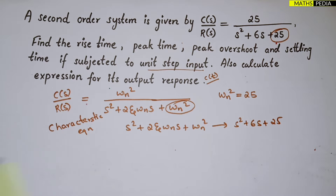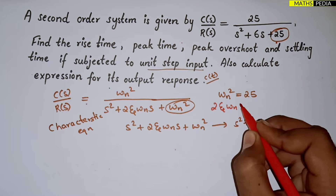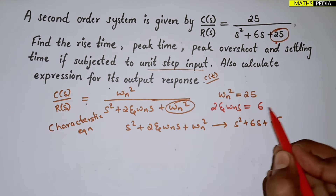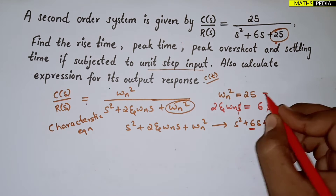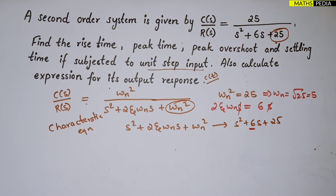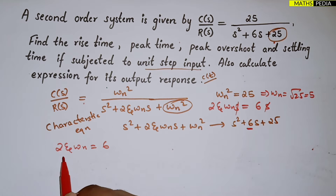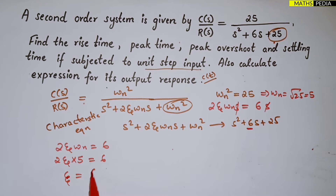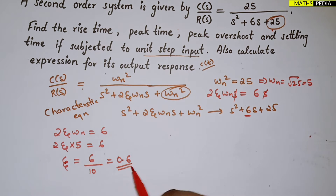When you compare, you get to know that ωn² equals 25, and 2ζωn equals 6. From ωn² = 25, we get ωn = √25 = 5. Substituting into 2ζωn = 6, we have 2 × ζ × 5 = 6, so ζ = 6/10 = 0.6. So ωn = 5 and ζ = 0.6.